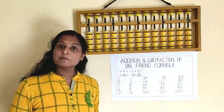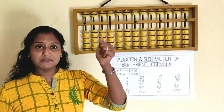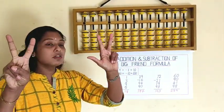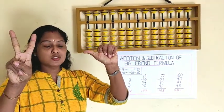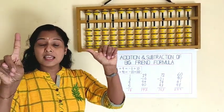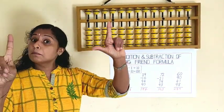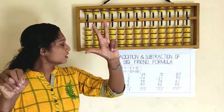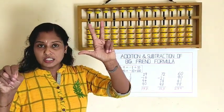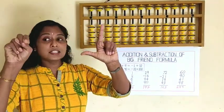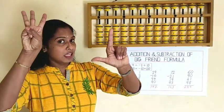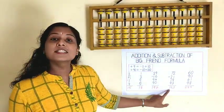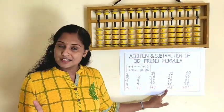Let's go to the next sum: 72 — 50, 60, 70, 71, 72 — minus 21 — minus 20, minus 1 — plus 19 — plus 10, plus 9, minus 1, plus 10 — plus 93 — minus 10, plus 100, plus 3. So we keep it in our mind: 100, 60, 3. Answer is 163.